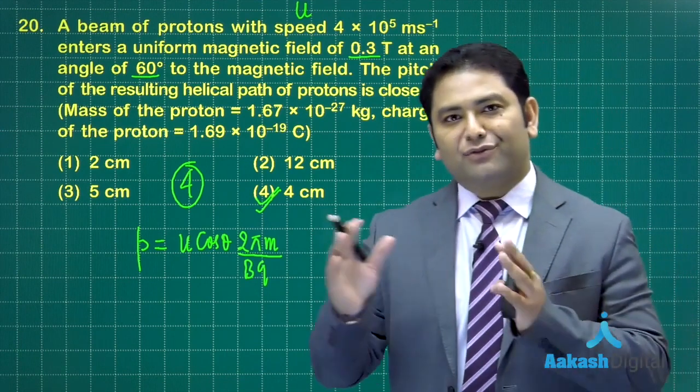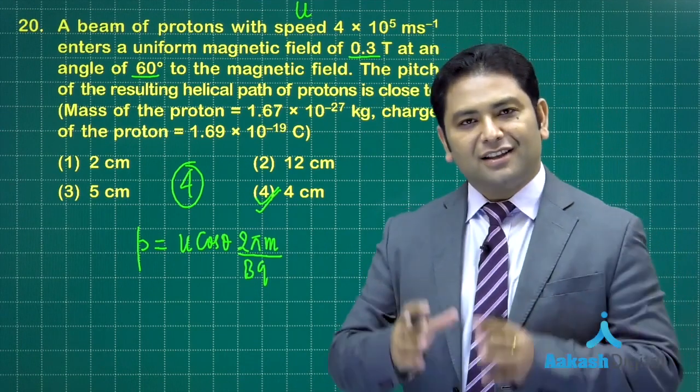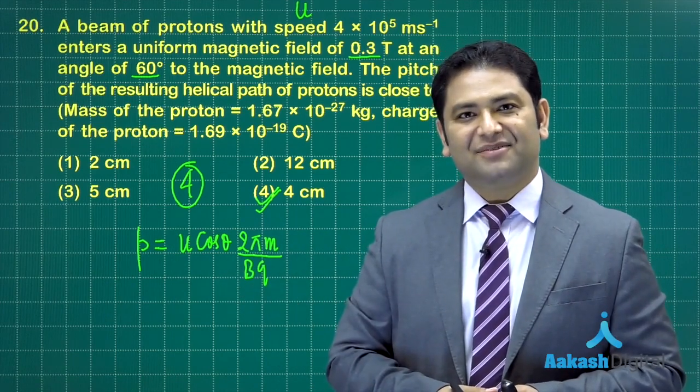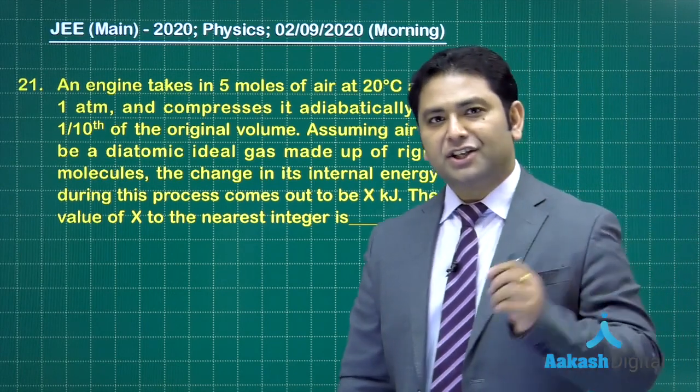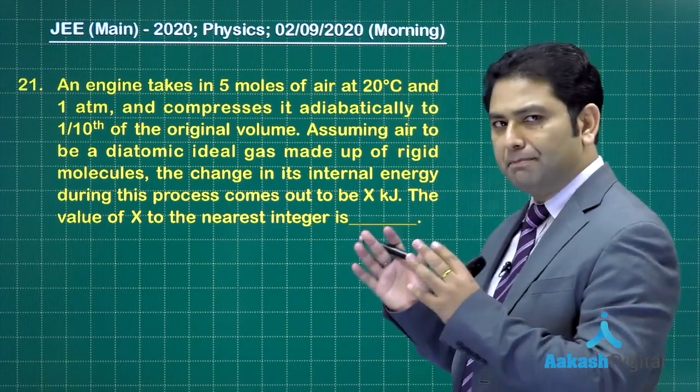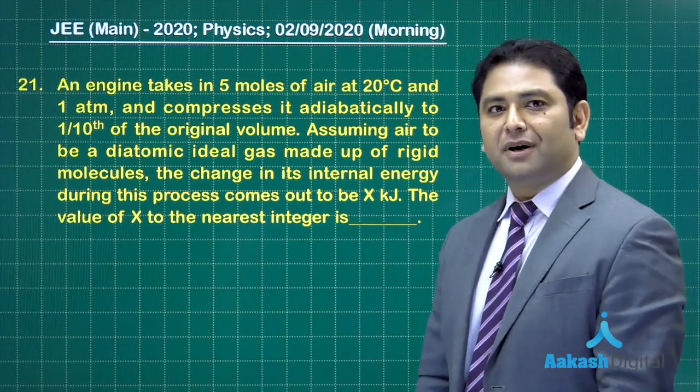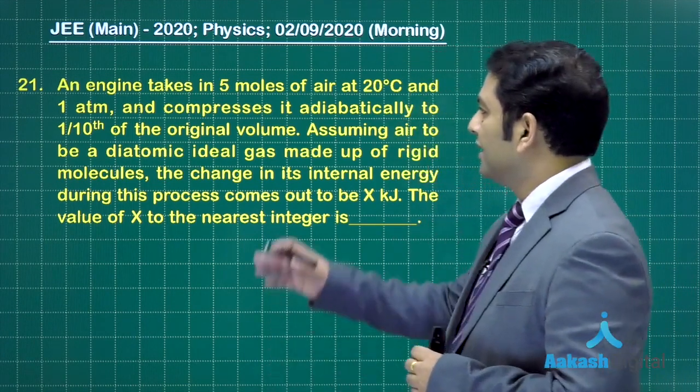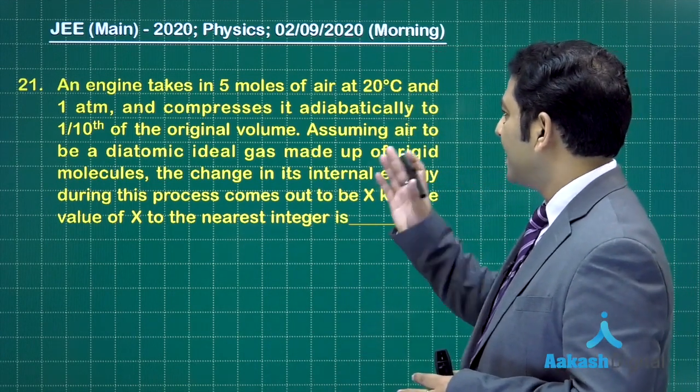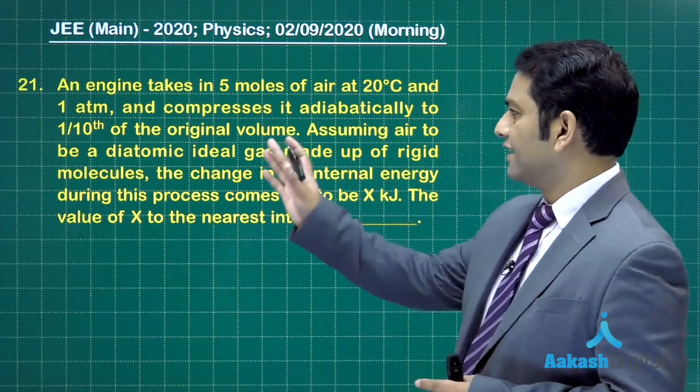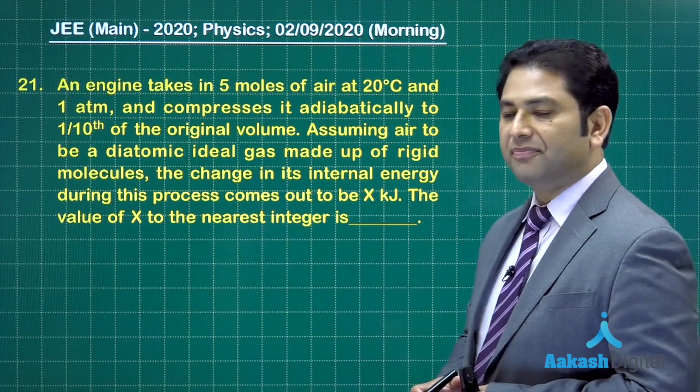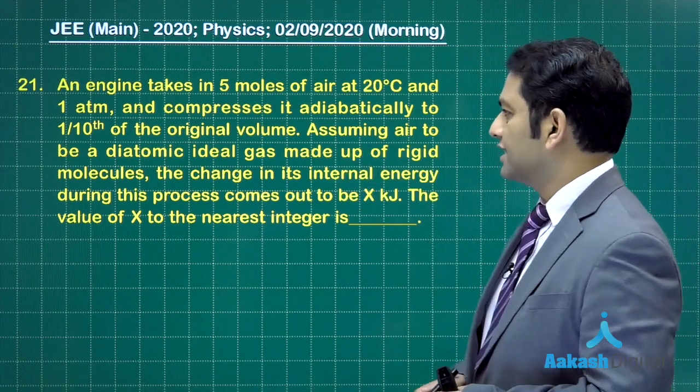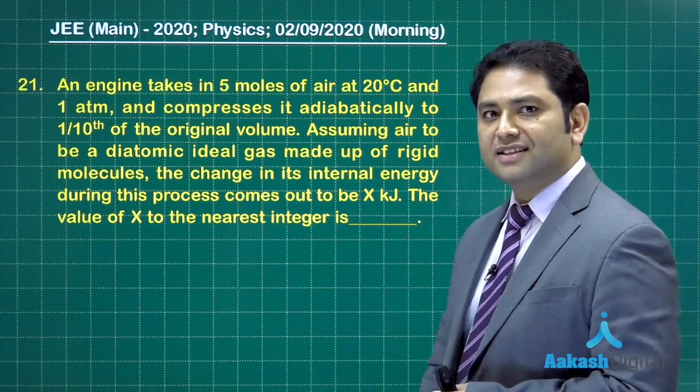After question number 20, there are five questions where the numerical value has to be assigned. It is not multiple choice questions. Question number 21 is integer-based and requires a bit of calculation, but that happens. It's from thermodynamics. There is an engine which has 5 moles of air at 20 degrees centigrade, and initial pressure has also been given.